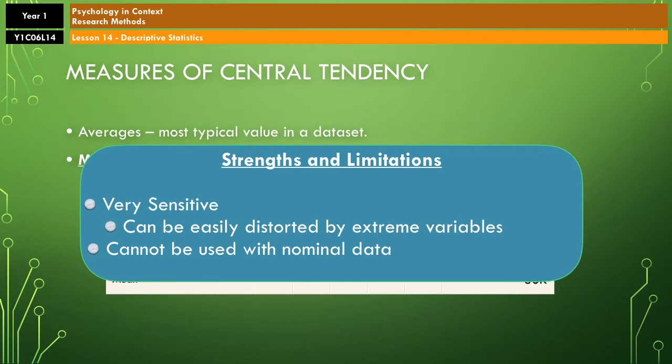So on that, one of the things you've got to be very aware of is that the mean is very sensitive. It will easily be distorted by extreme variables, such as the 95 and 98 thousand that you just saw in that example. What you've also got to be aware of is that it can't be used with nominal data, so data that is in categories. It doesn't make sense to use it with data that's categorical either. Imagine if you were going to work out the average number of legs that people have, for example. That would make no sense.